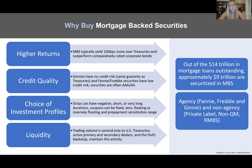Considering investment profiles, we see things like strips — IOs and POs, interest only and principal only portions — which can have negative, short, or very long durations, giving broad investment profiles. We also see varying coupons — either fixed, zero, floating, or inversely floating. We have ARMs, adjustable rate mortgages, which can increase dramatically as well. Prepayment sensitivities also range, indicated by the CPR numbers and your percentage of PSA.